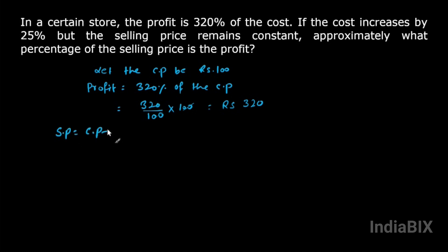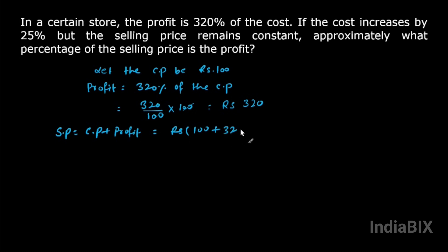These cancel out, therefore the profit will be rupees 320. So what will be the selling price? Selling price is cost price plus profit — cost price is rupees 100 and profit is 320, therefore selling price will be rupees 420.